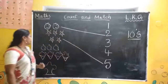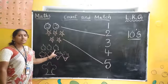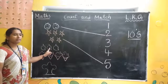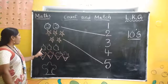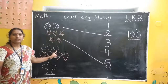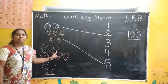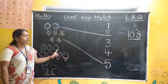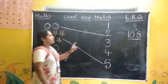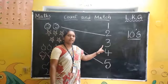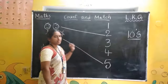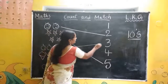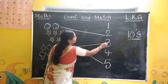What are these? These are mangoes. How many mangoes are there? One, two, three. Three mangoes. Where is number three? Here. Draw this, children. Three mangoes and number three.